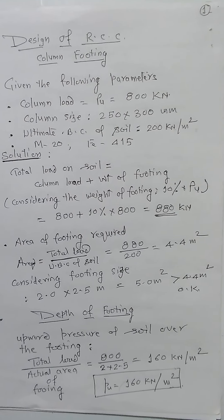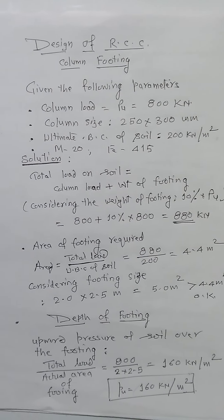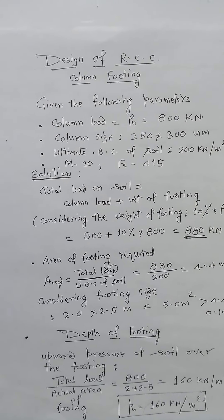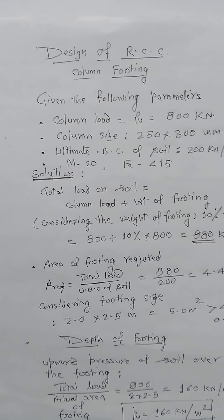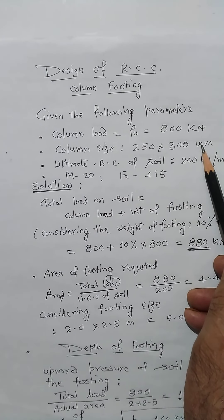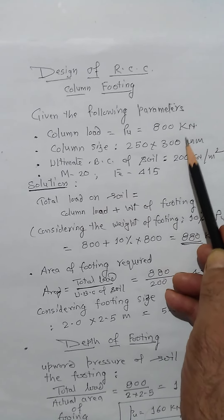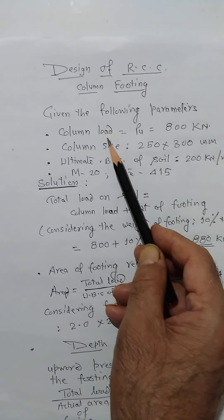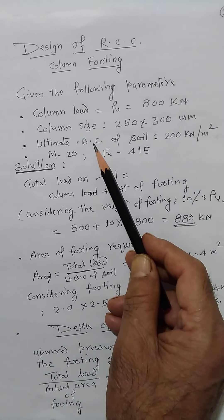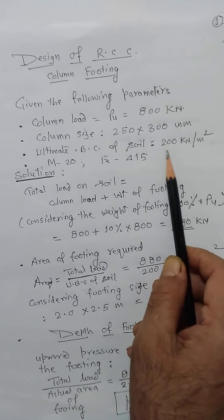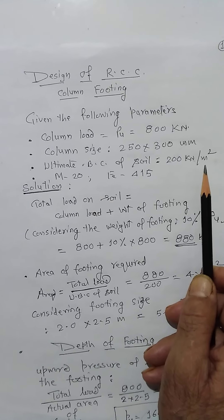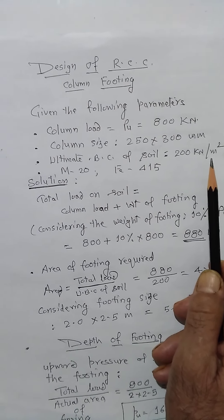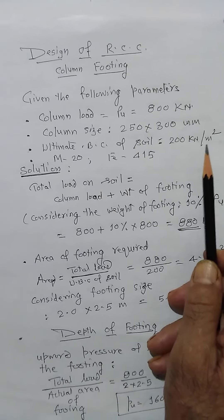We will design an RCC column footing for a given column. Last time I showed one problem and designed a column of RCC having a load of 800 kN and the cross section comes out to be 250 x 300 mm. We are designing the footing for the same column of 250 x 300, taking an actual load of 800 kN as the designed load. One additional parameter is the ultimate bearing capacity of soil, which I am considering as 200 kN per meter square. The same mix and steel — M20 and FE415 — that we used for the column design will be used here.